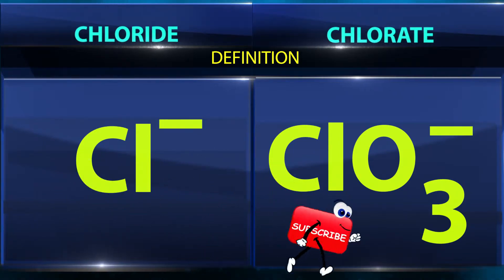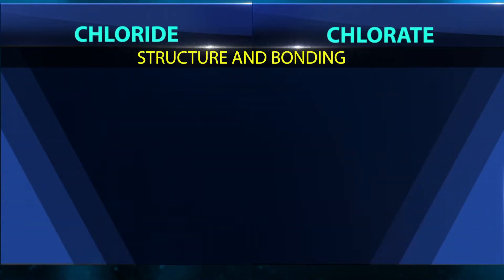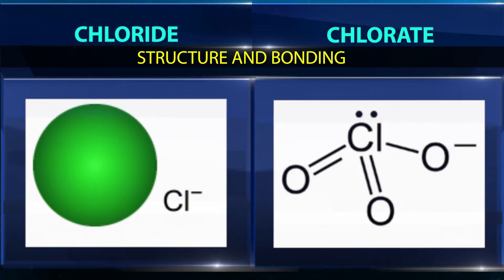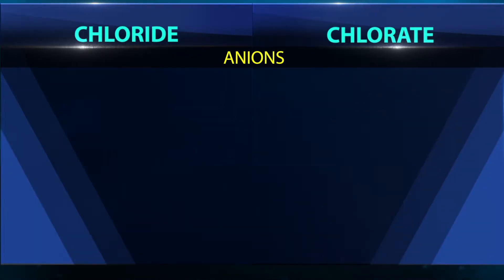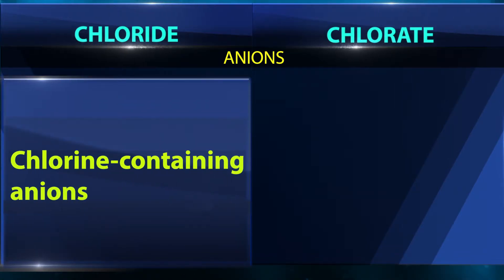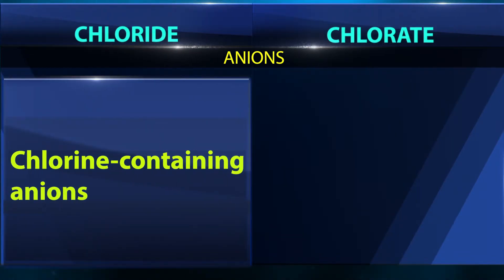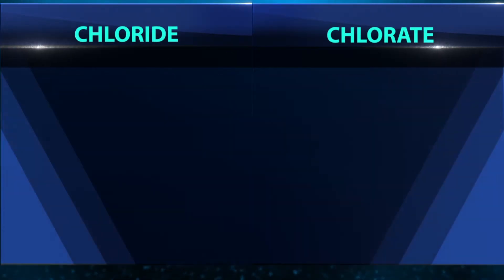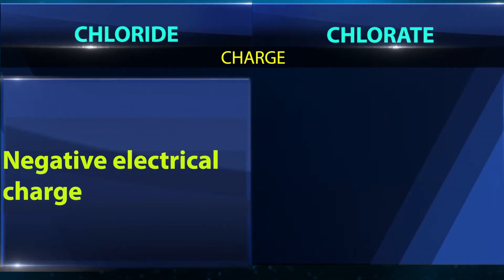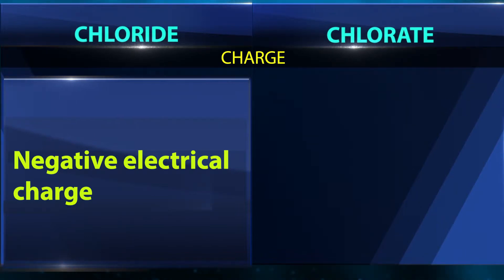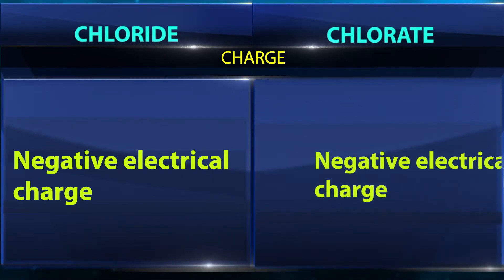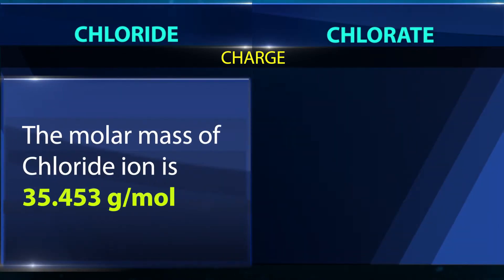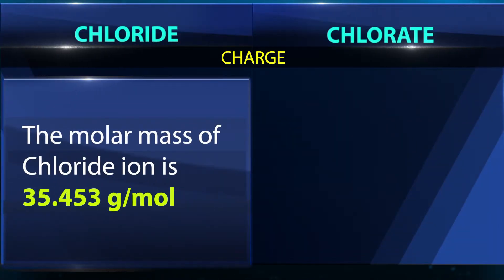Regarding structure and bonding, both chloride and chlorate are chlorine-containing anions. Both carry a negative electrical charge.